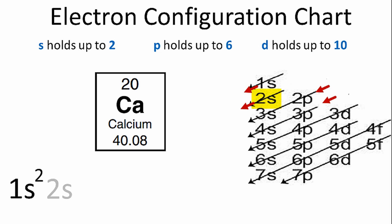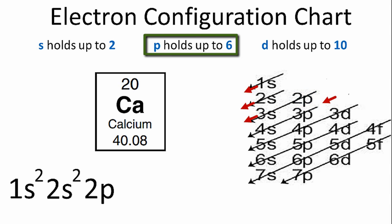We'll go down the next row, where we have 2s, and we'll put 2 electrons there. In the third row, it starts with 2p, and p orbitals can hold up to 6 electrons. We'll put all 6 electrons in the 2p orbital. That gives us 10 electrons. We need 20 for calcium, so we're halfway there.